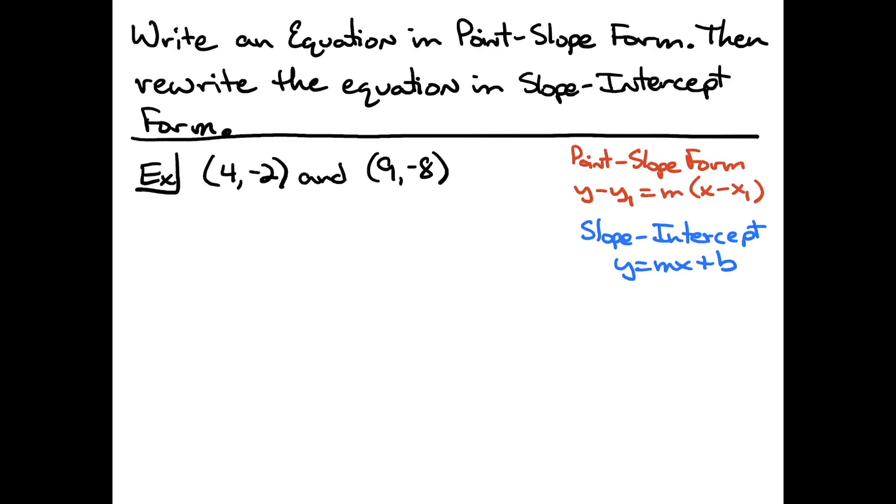In this video, I'm going to work out one example where I write the equation in point-slope form of the line that contains the two given points, and then I'm going to rewrite that equation into slope-intercept form. Over here on the right-hand side, I've got just a review of what the two different forms look like. Point-slope form is y minus y1 equals m times quantity x minus x1. Slope-intercept form is y equals mx plus b.